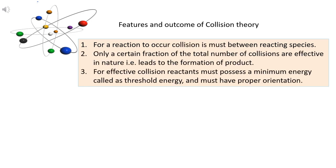These were the important features and postulates of collision theory. The important outcomes are as follows: for a reaction to occur, collision is a must between the reacting species. Only a certain fraction of the total number of collisions are effective — that is, they lead to the formation of product. For effective collisions, reactants must possess a minimum energy called threshold energy, and must have a proper orientation.